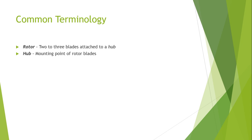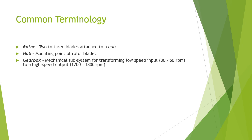The hub is the mounting point for the rotor blades. Then there is the gearbox, which is a mechanical subsystem for transforming a low-speed input — say 30 to 60 revolutions per minute — to a high-speed output using a gear mechanism.